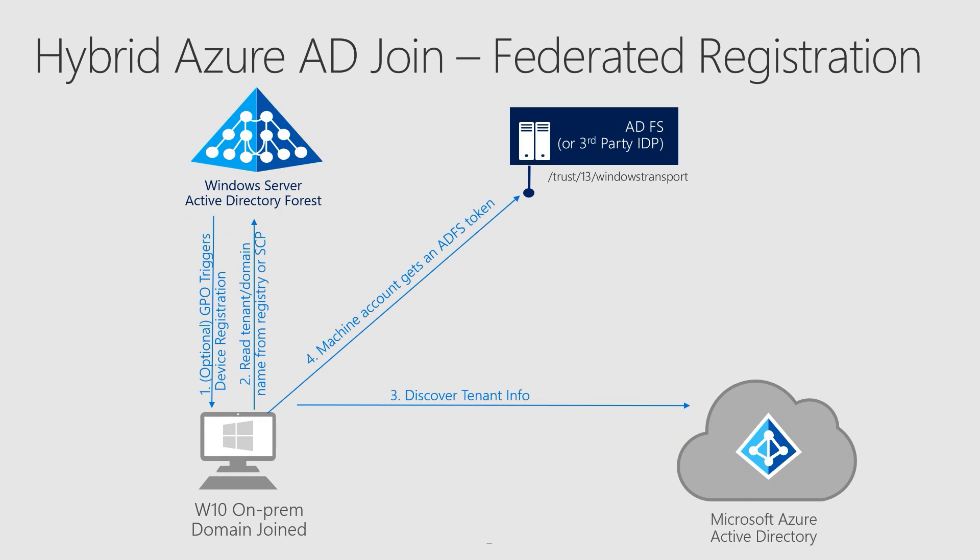In exchange for that, Windows Integrated Authentication challenges the workstation and gets a SAML token through the WS-Trust channel. To reiterate, if your federation service is configured through the SAML protocol, federated registration is not supported. In step five, that SAML token is then passed along to Azure Active Directory to get a token for the Azure Device Registration Service, to prove that authentication with the on-premises federation service was successful.